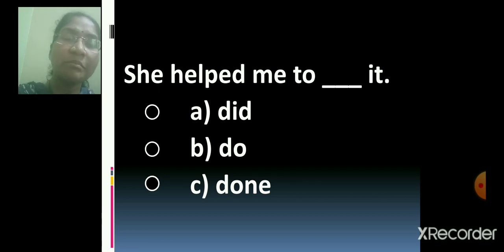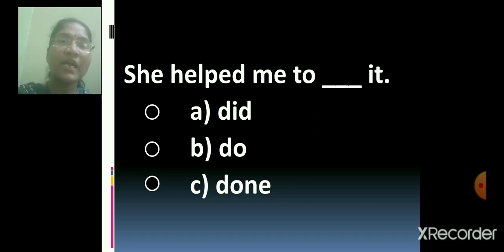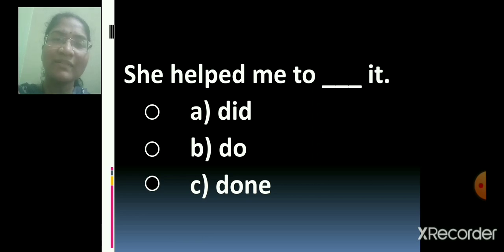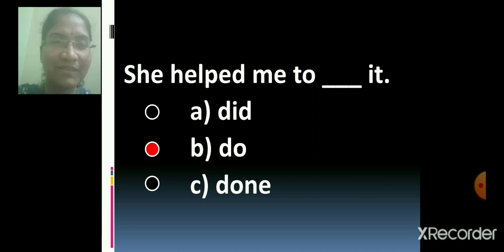She helped me to dash it. She helped me to did it, or she helped me to do it, or she helped me to done it? Children, come on, tell me. She helped me to do it. So B is the correct option. She helped me to do it.